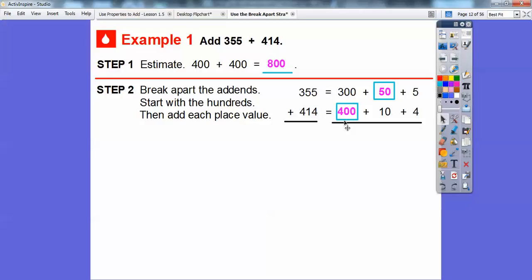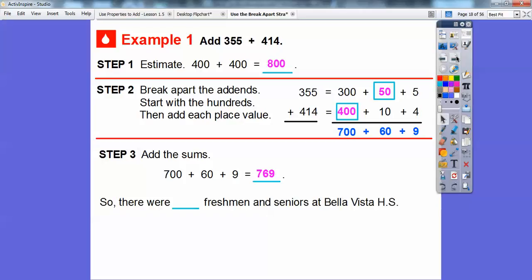Now we can add these numbers. They're all friendly numbers because they end in zeros. 300 plus 400 is 700, 50 plus 10 is 60, and finally 5 plus 4 is 9. So then we can add those sums together. 700 plus 60 plus 9 is going to give us 769. So there were 769 freshmen and seniors at Bella Vista High School.